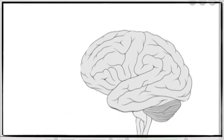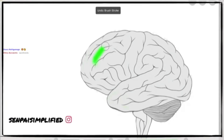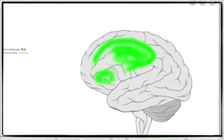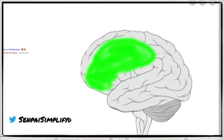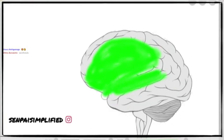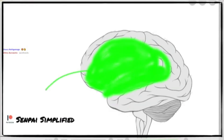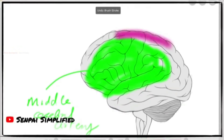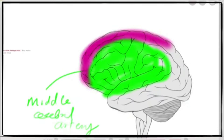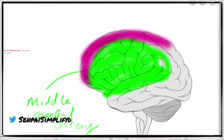This is a diagram of the lateral aspect of the brain. I'll color which parts of the brain are supplied by the middle cerebral artery — this whole area is supplied by the middle cerebral artery. The superior part of the temporal lobe is also supplied by the middle cerebral artery. This whole other area is supplied by the anterior cerebral artery. The middle cerebral artery supplies the anterior lateral aspect of the brain, while the anterior cerebral artery supplies most of the anterior medial aspect.